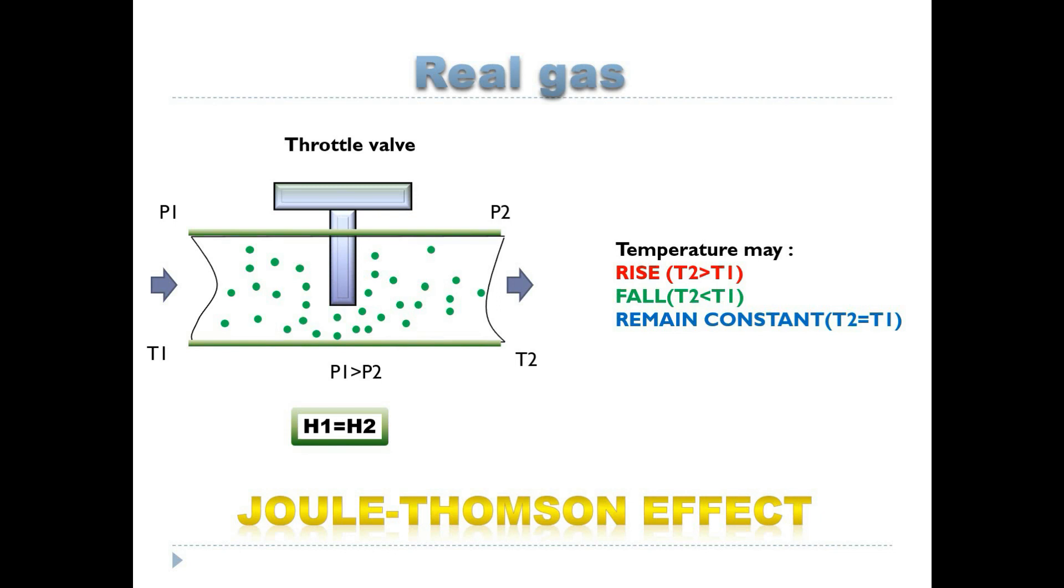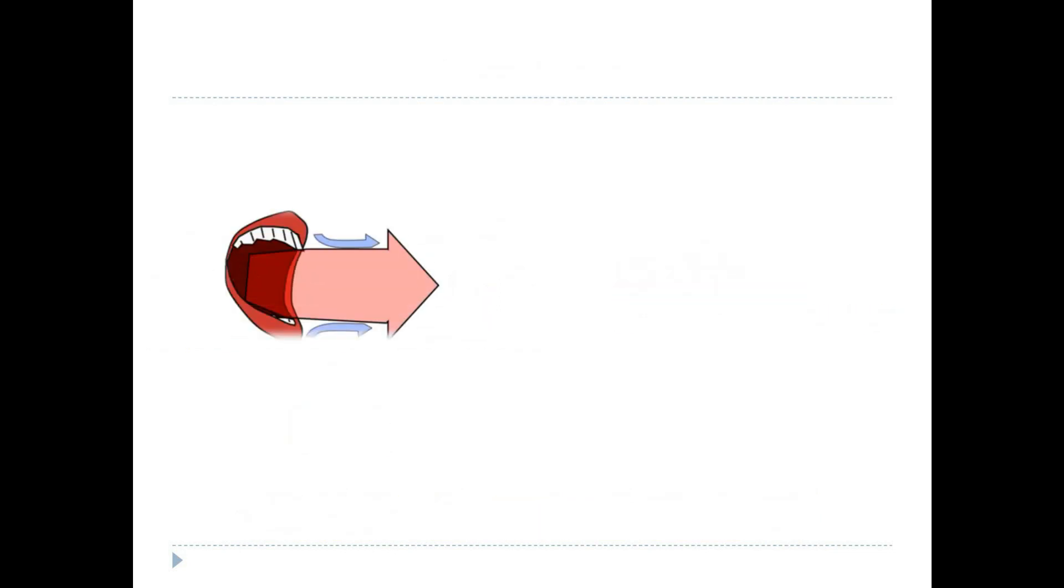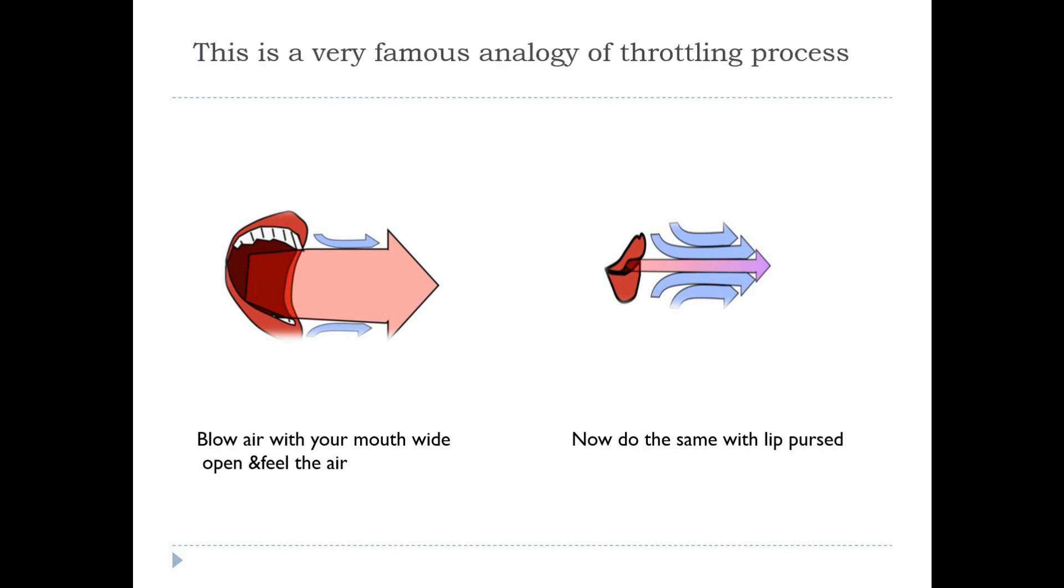Now, here is a little activity for you. Blow air with your mouth wide open and feel the air. You may notice that the air is a little bit warmer. Now, repeat the same process with your lips pursed. This time, you may see that the air is cooler. Interesting, isn't it? This is a very famous analogy of throttling process.